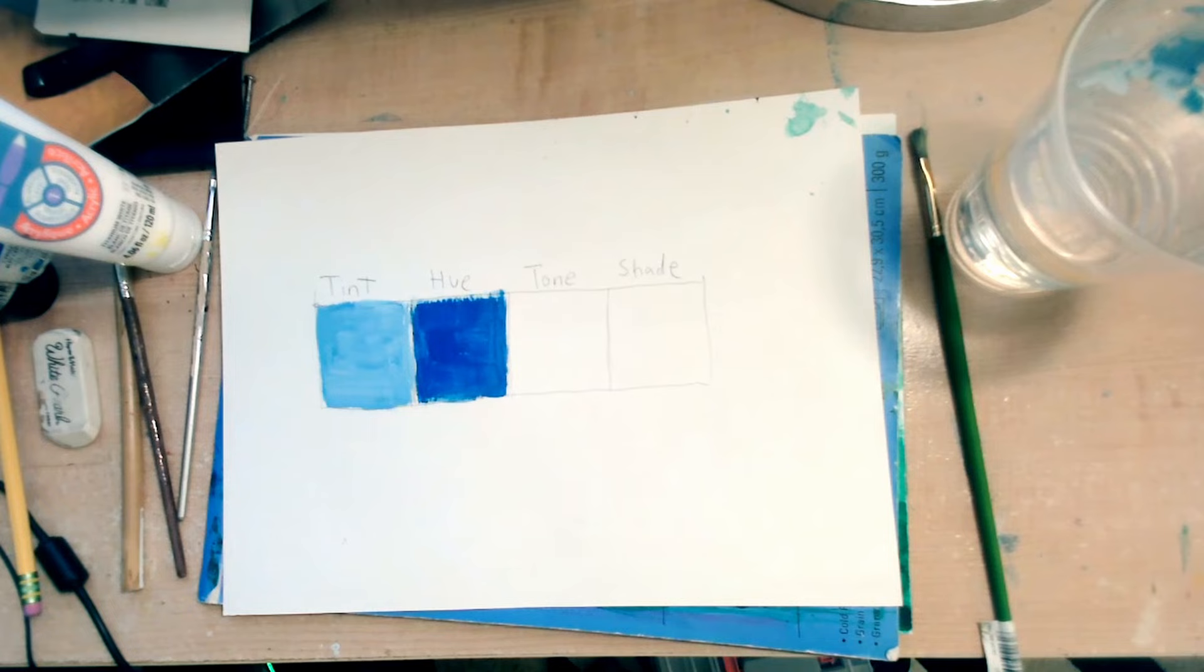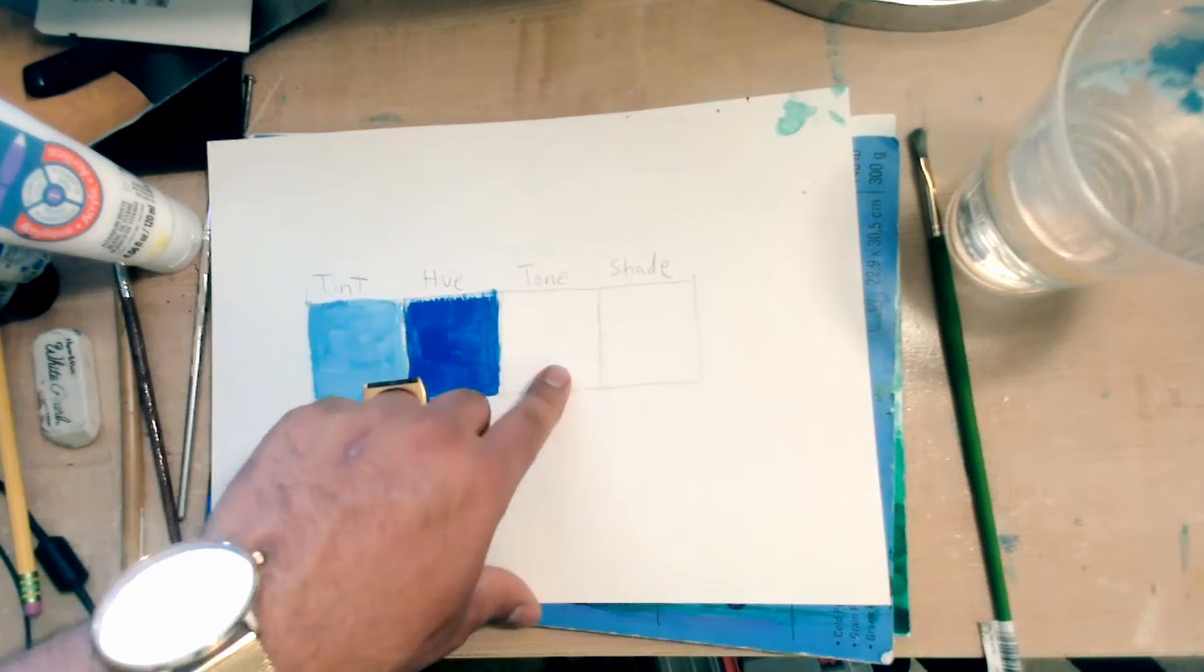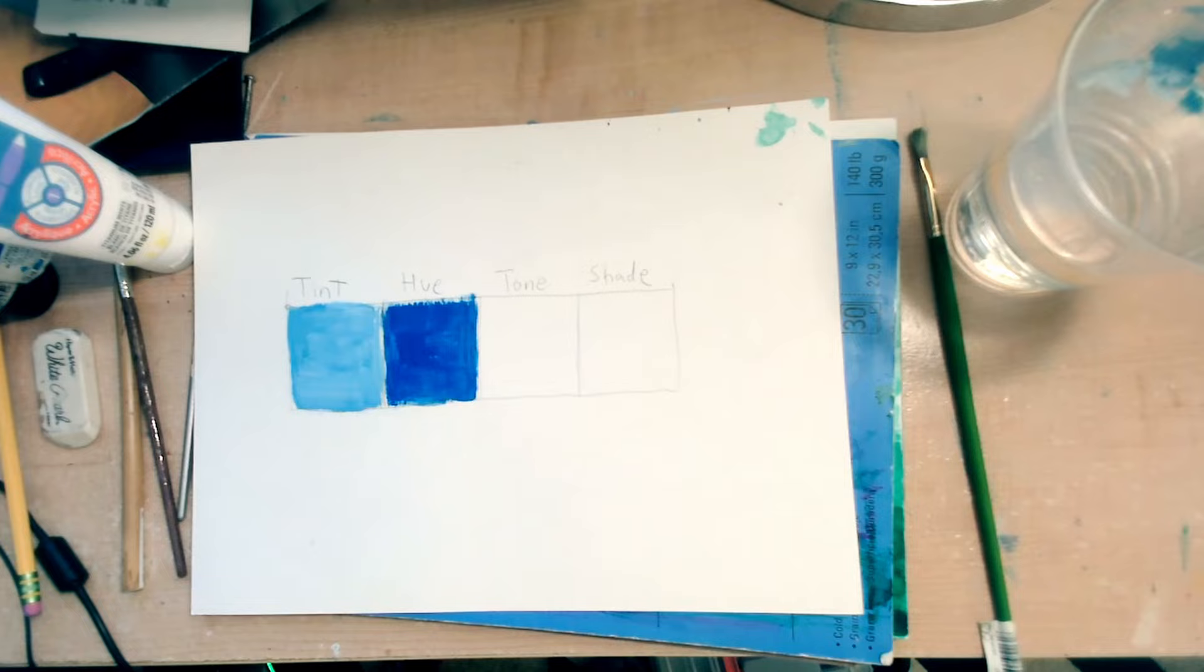All right, so we have tint. We have hue. We're going to go over to tone. Tone. And tone is actually the hue or color here with gray.